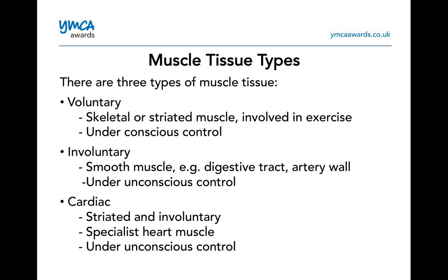Voluntary muscle: if I volunteer to do something, that's my choice — I decided to do it. So if I want to take a bar and lift it up, my biceps would be voluntary because I decided to lift it. Whereas an involuntary muscle would be something like my heart or my digestive system, because those have to continue to work — if they don't, the body shuts down. Cardiac muscle is an involuntary muscle; it's striated in appearance and not under our conscious control.